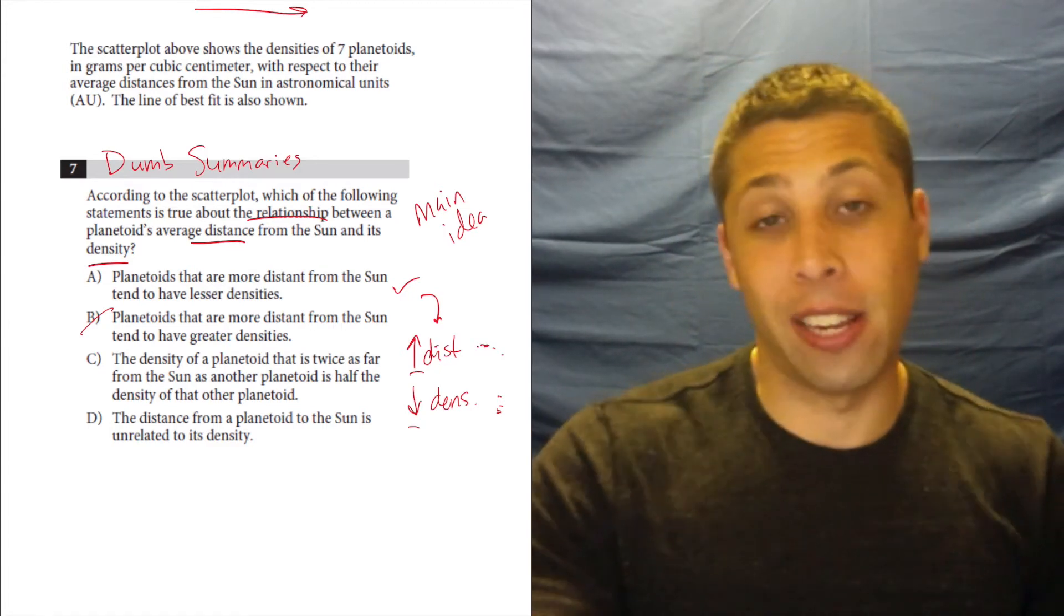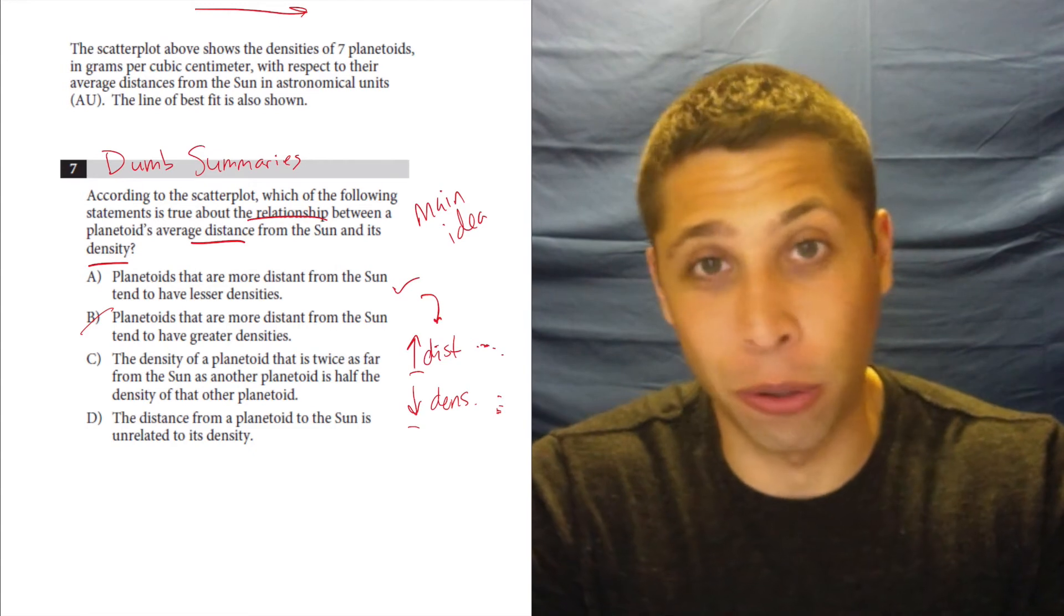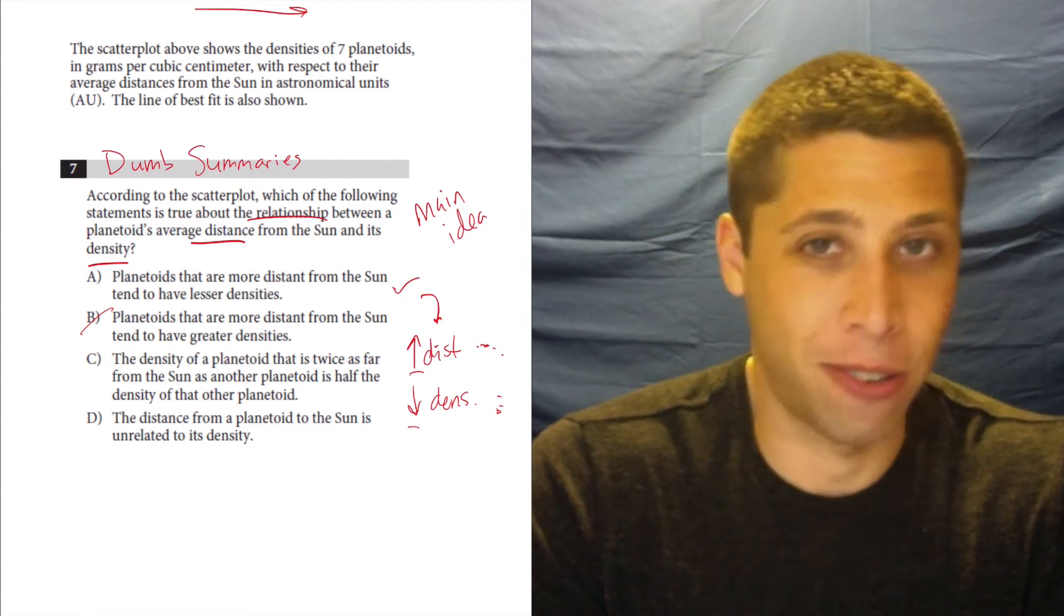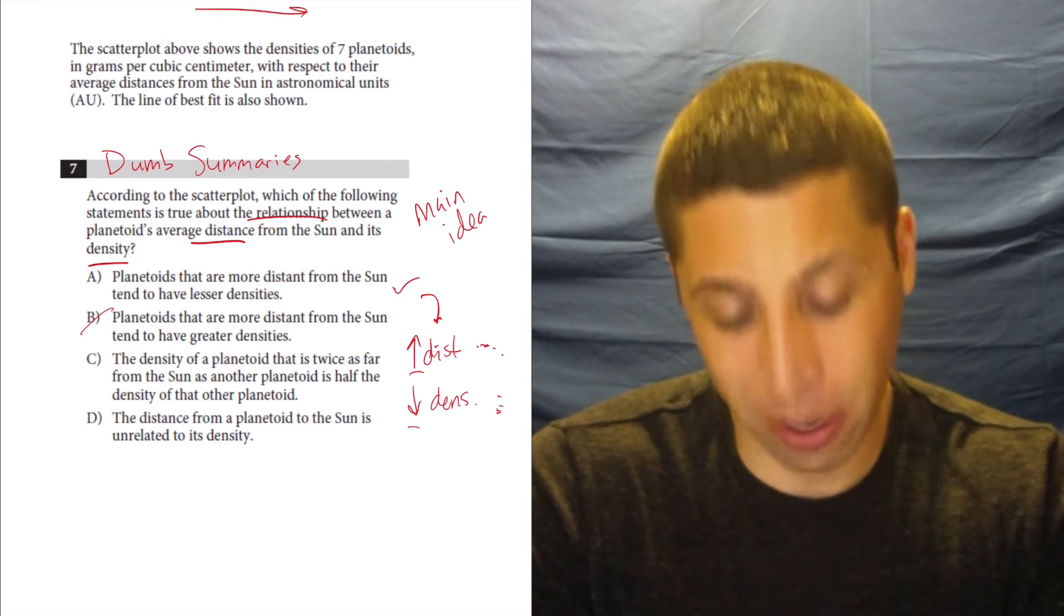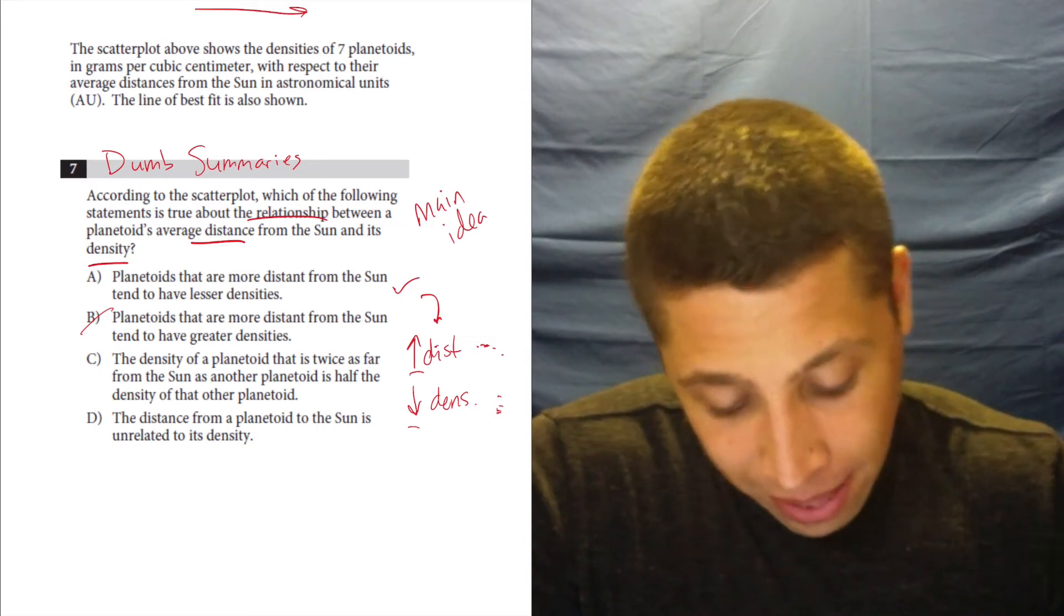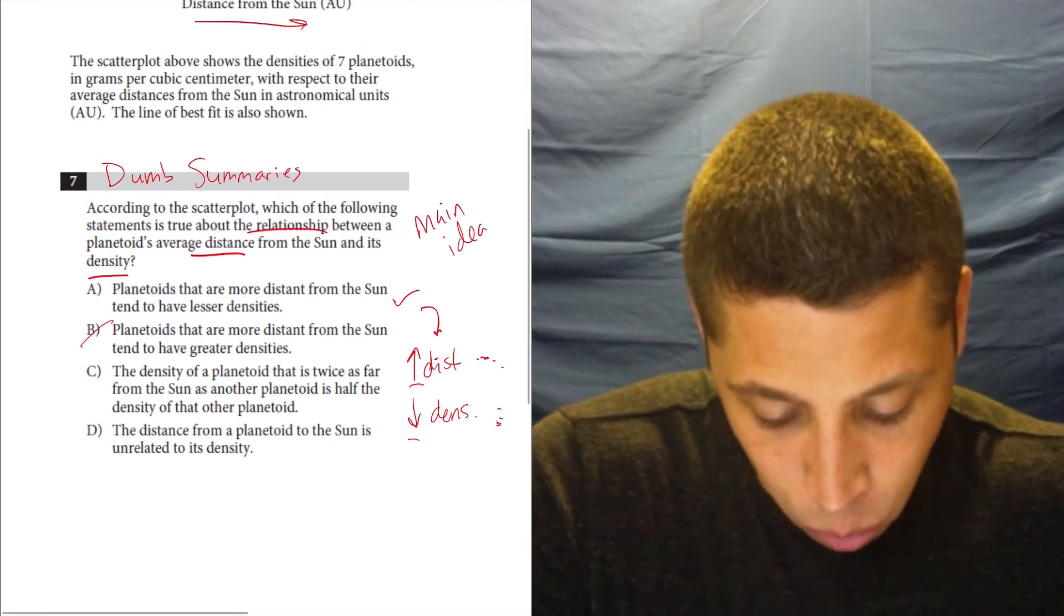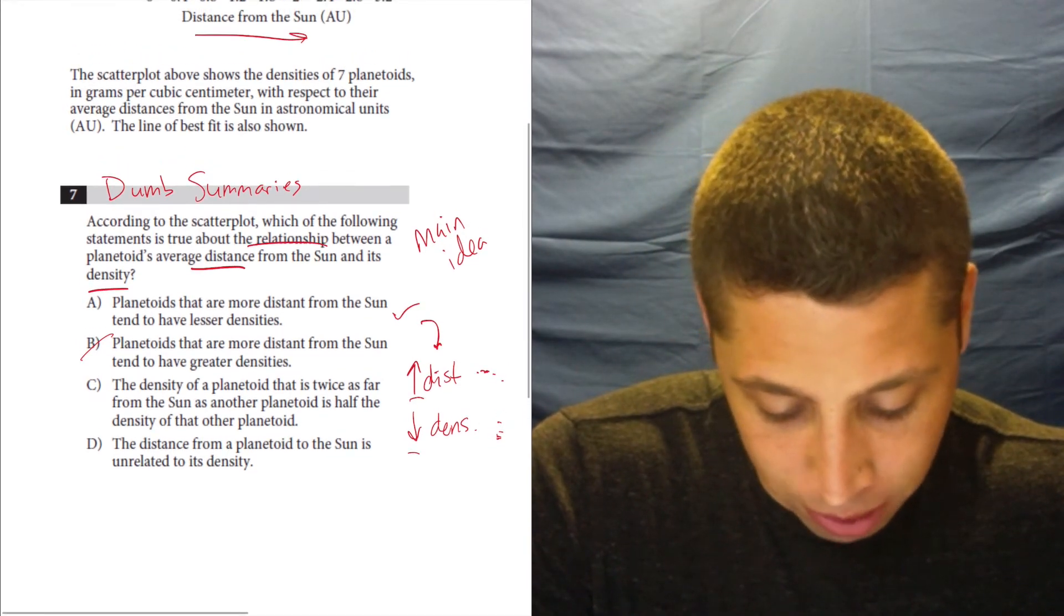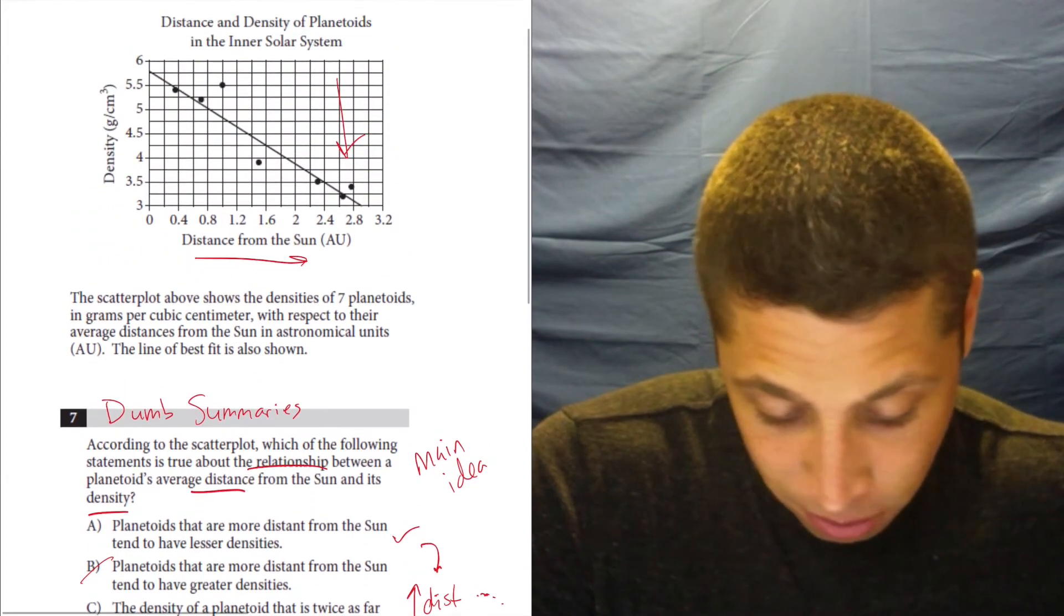There's a world in which that's true, but I already kind of know that A matches. So why bother doing that kind of work? Now, it's not that hard. A planetoid that is twice as far from the sun as another planetoid is half the density of that other planetoid. Okay.